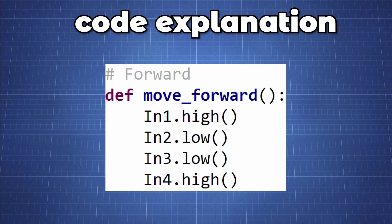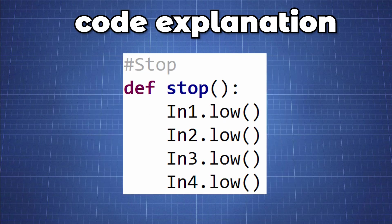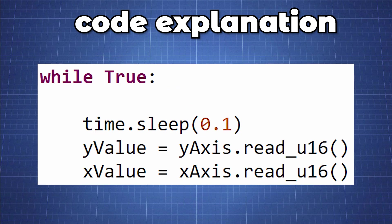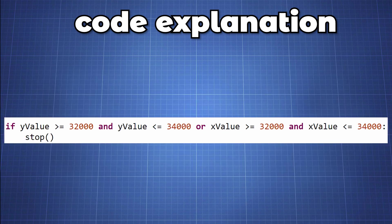We again define the functions move_forward, backward and stop, and this time we will use the move_forward to control the right turn and left turn. In our endless loop we will read the x value and the y value for our joystick which fluctuates. The x and y values we receive are between 32,000 to 34,000. We can then use an if statement to call the stop function if we receive values in this range.